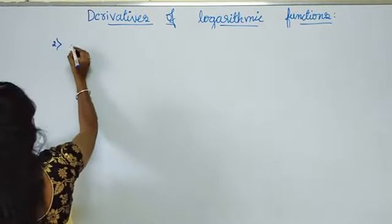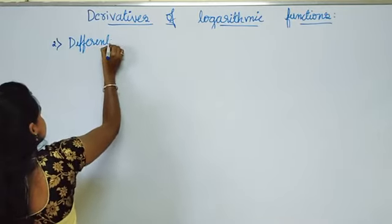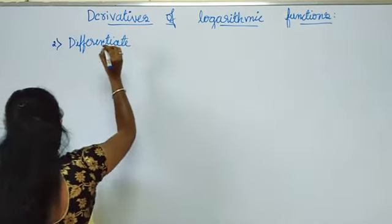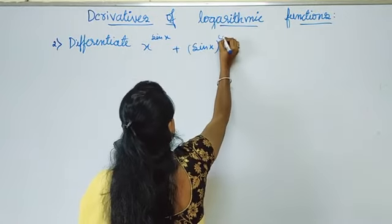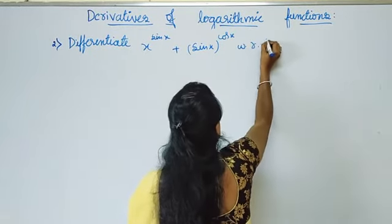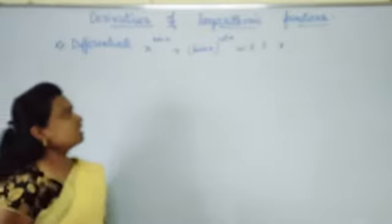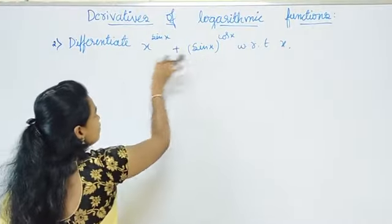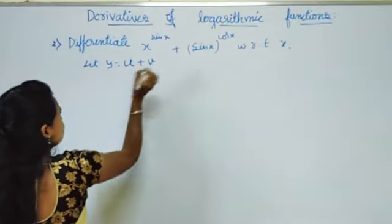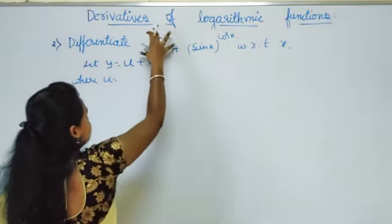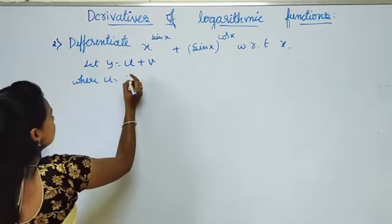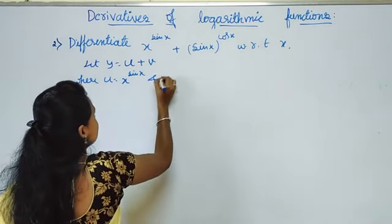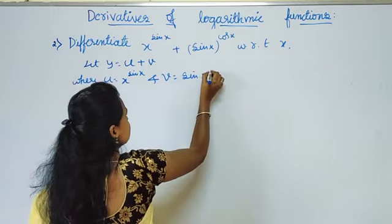Next problem: differentiate x power sin x plus sin x power cos x with respect to x. Here we have two terms. Let y equals u plus v, where u equals x power sin x and v equals sin x power cos x. We differentiate u and v separately.